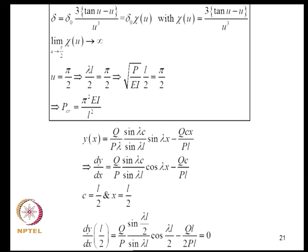As U → π/2, tan(π/2) is undefined, so χ(U) → ∞. The condition U = π/2 is therefore a critical condition. Evaluating what value of P corresponds to U = π/2 gives P_critical = π²EI/L², which is the well-known Euler buckling load. If P is close to this value, the amplification factor becomes very large — this is where designers need to be concerned.